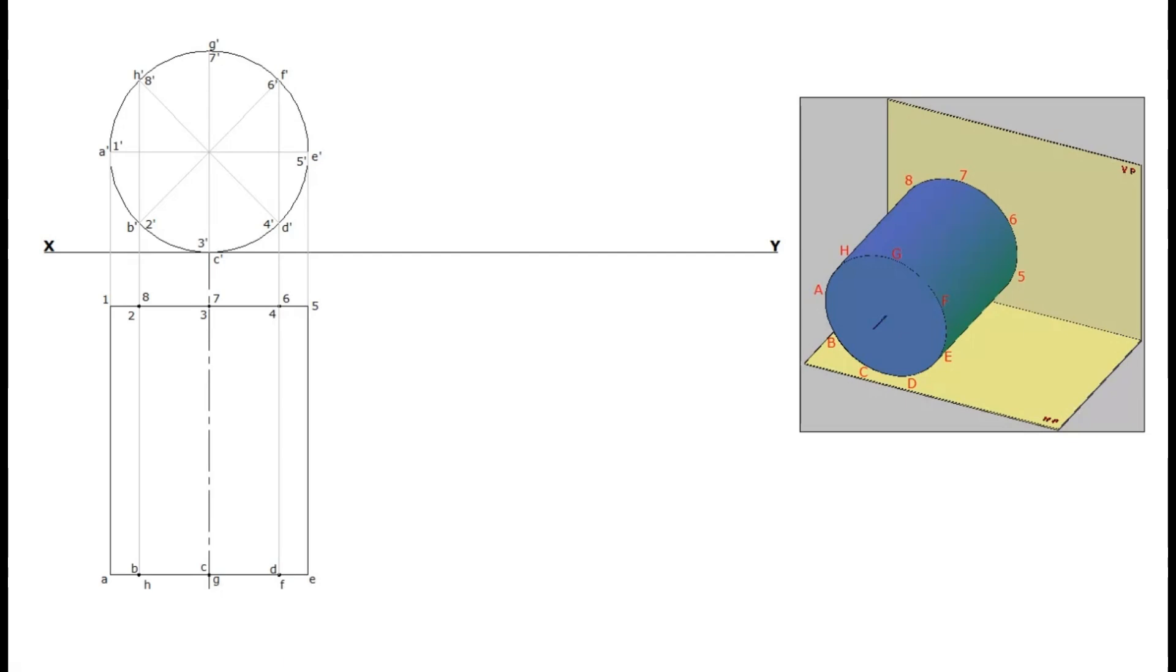By this, the first stage projection of the cylinder for the condition axis perpendicular to VP and parallel to HP are drawn. Our problem says that the cylinder is lying on the ground with its axis inclined to VP. So the top view is to be tilted for the given inclination.